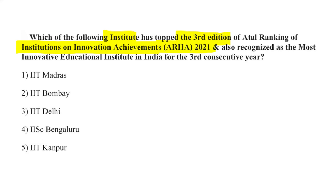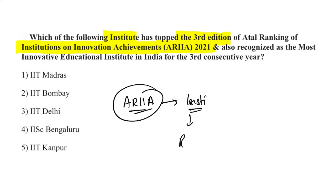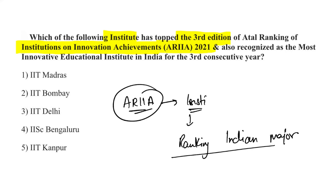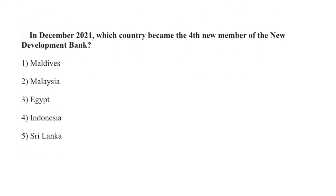As per the third edition of the ARIIA Rankings — the Atal Ranking of Institutions on Innovation Achievements — IIT Madras topped the list, followed by IIT Bombay in second place and IIT Delhi in third. ARIIA is an initiative of the Union Education Ministry to rank major higher education institutes of India. Egypt became the fourth new member of the New Development Bank, which was established in 2015 by BRICS nations: Brazil, Russia, India, China, and South Africa.